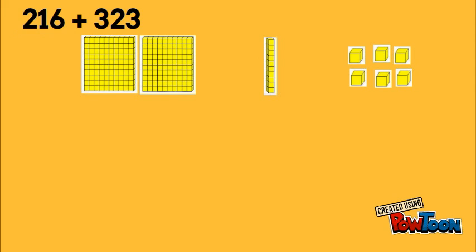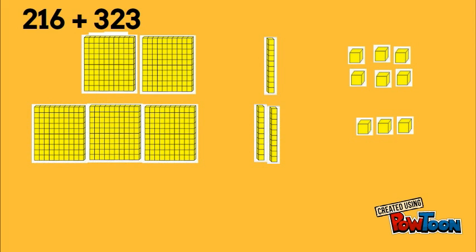Now we'll add 323. So we start at the 1's. We have 3 ones. Alright, then we have 2 tens and 2 rods. And we have 3 hundreds. So 3 flats.